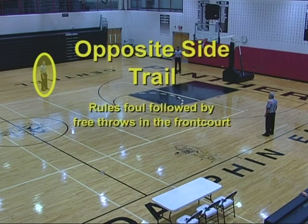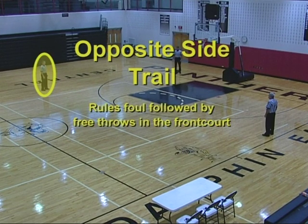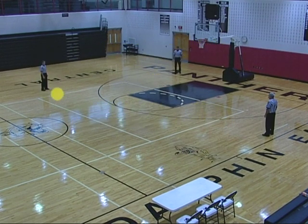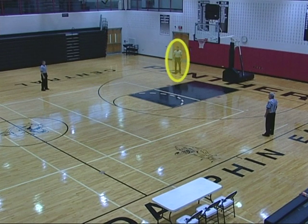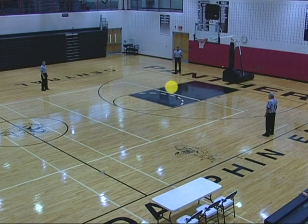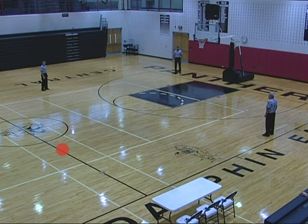Opposite side trail rules foul, followed by free throws in the front court. Proceeds to the reporting area, reports the foul, and becomes opposite side center. Opposite side lead becomes table side lead and handles the free throw. Table side center becomes table side trail.